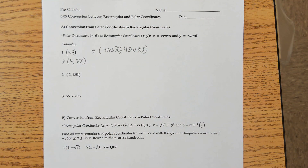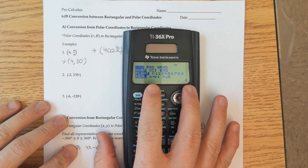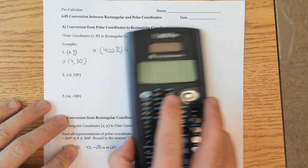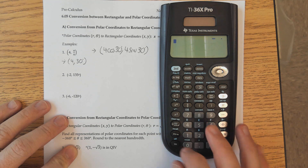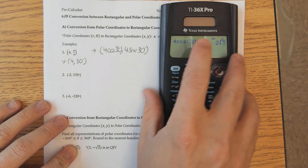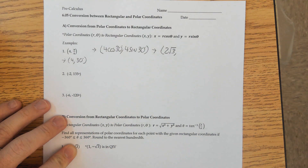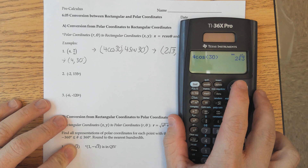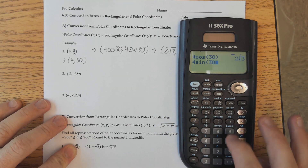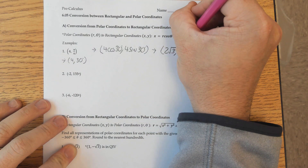This looks very familiar from vectors, right? When we were given the magnitude and the direction and we were asked to find the components. Make sure your calculator is in degrees — degrees should be highlighted. So 4 cosine 30 degrees gives me 2 root 3. I want the exact value, so leave it as 2 root 3. And 4 sine 30 gives 2. So the point is 2 root 3 comma 2.